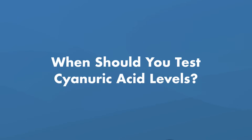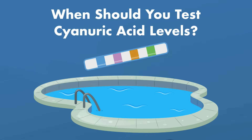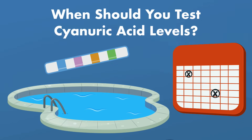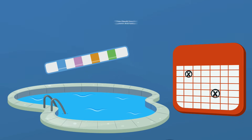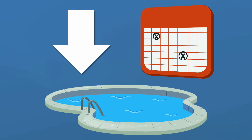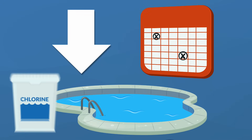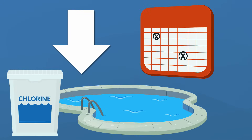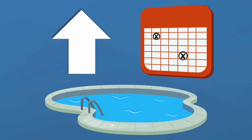So when should you test your cyanuric acid levels? Besides regularly testing your pool water, you'll want to test your water at the beginning and the end of pool season. If your cyanuric acid is low at the beginning of the season, you'll end up using more chlorine in the months ahead. And if it's high at the end of the season, it might be time to change your pool water.